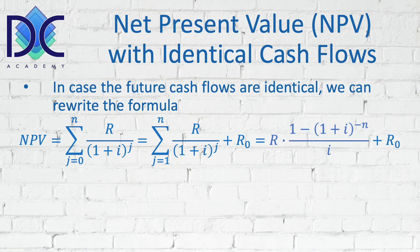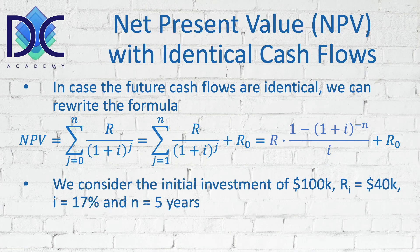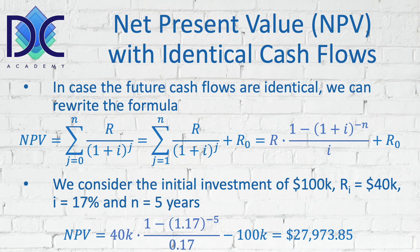Let's have a calculation. We have an initial investment of $100,000, future cash flows of $40,000 per year, an interest rate of 17%, and five years of cash flows. When we put this in the formula, the NPV is 40k multiplied by [1 − (1.17)^(−5)] divided by 0.17, minus 100k. We find a net present value of $27,973.85. The result is positive, so we are happy — our project has a positive outcome.